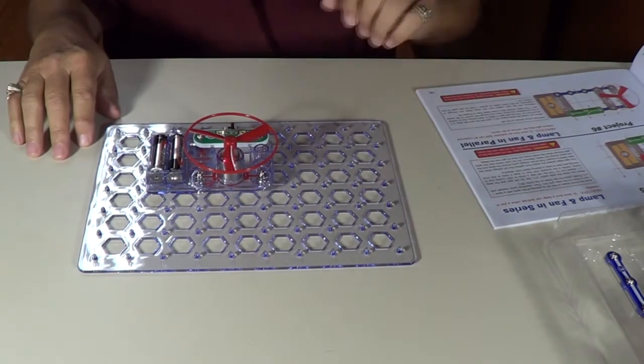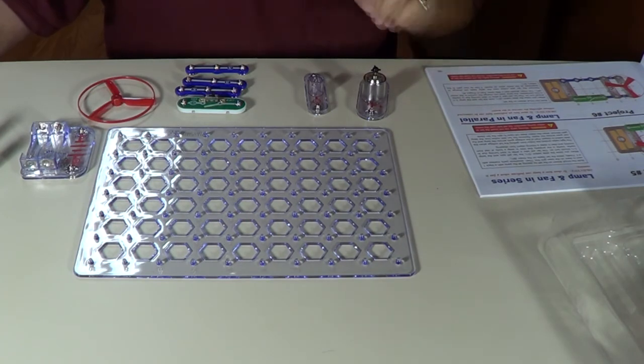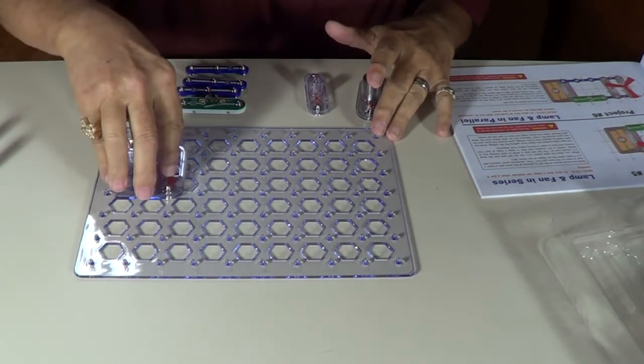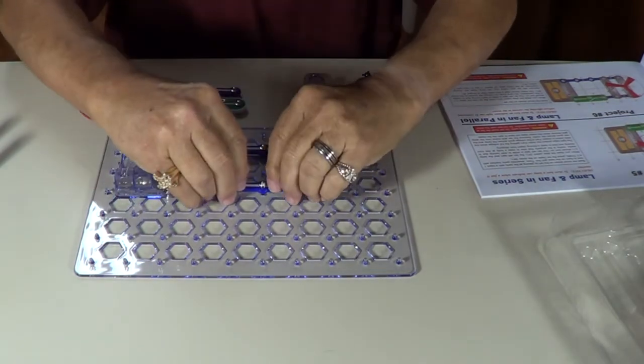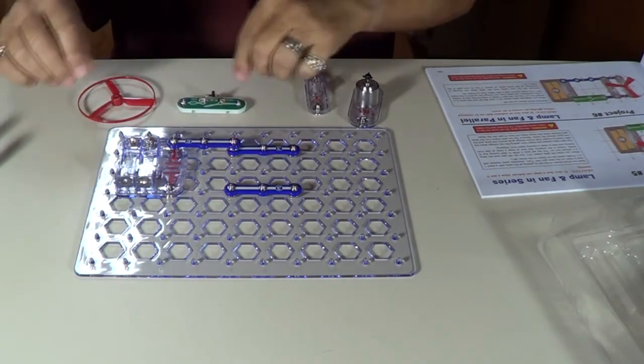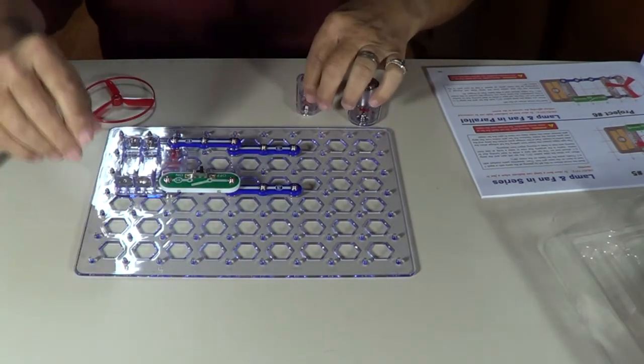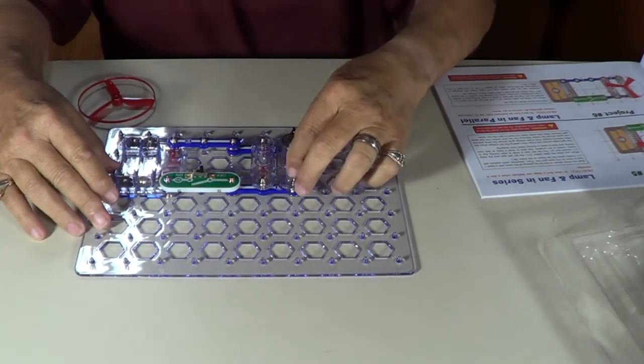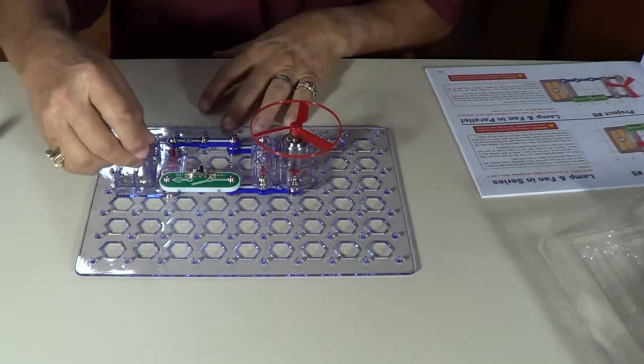Everything goes off. So there's project number five. Project number six, this is called lamp and fan, but this is a parallel circuit. We need to put our battery pack on. And we're going to need a three connector there, three connector there. And we're going to need to connect the battery to that first three connector. Put your switch one across there. Your lamp in a parallel series there and your motor in a parallel there. Put your propeller on. Put your batteries in now.